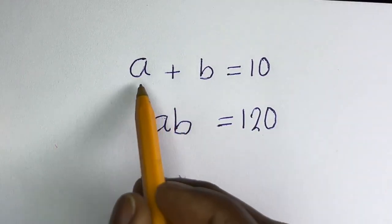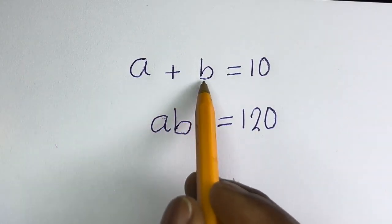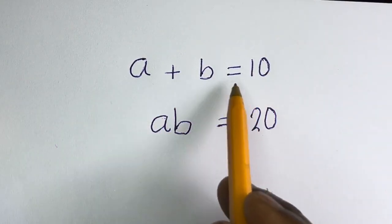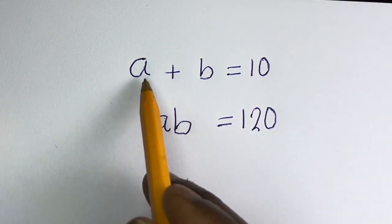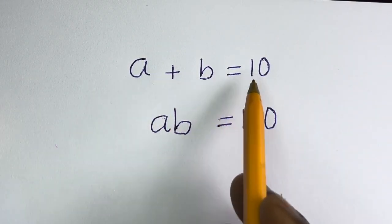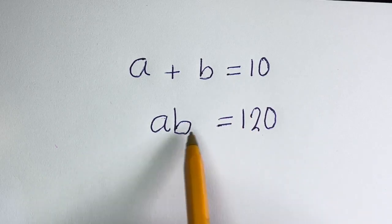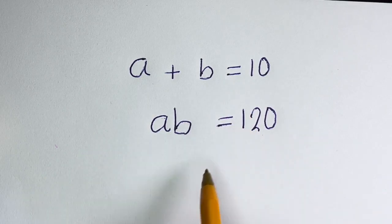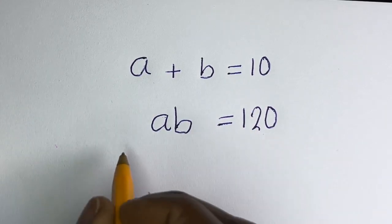Hello, how to solve for A and B in this equation. A plus B is equal to 10, AB is equal to 120.